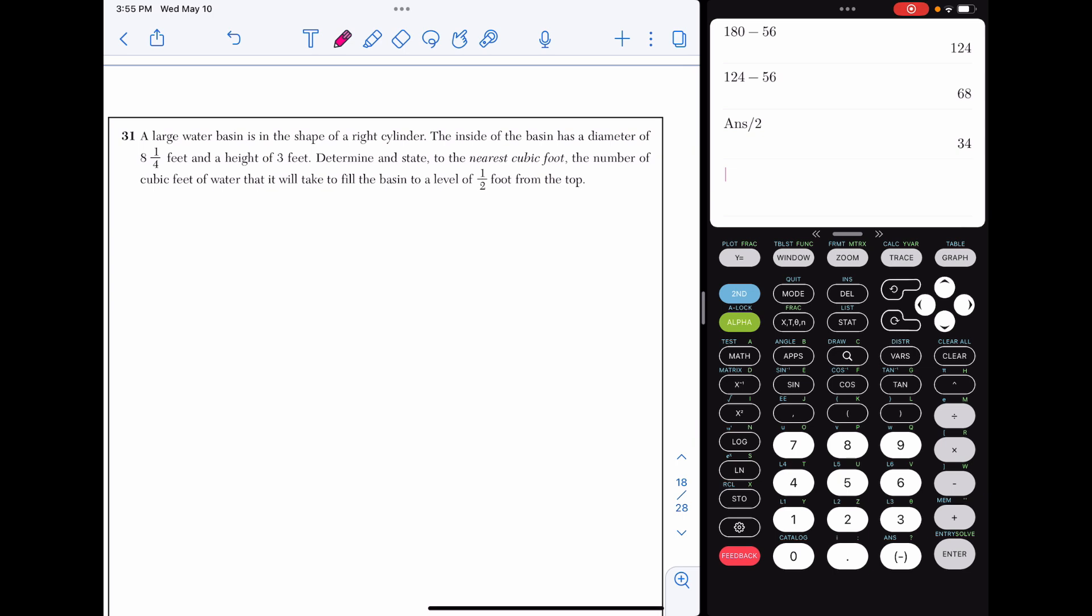Okay, our last part two question. A large water basin is in the shape of a right cylinder. The inside of the basin has a diameter of eight and a quarter feet and a height of three. Determine and state to the nearest cubic foot, the number of cubic feet of water that it will take to fill the basin to a level one half foot from the top. So I see automatically cylinder here and I'm thinking this has got to be a volume question. So I'm going to go to my reference sheet. That's going to be at the back of your test booklet. And I'm going to copy down the volume formula for the cylinder, which is pi r squared h. Alright, so now when I take a look at this, I'm going to see what I can plug in here. And I can see that the height is three.